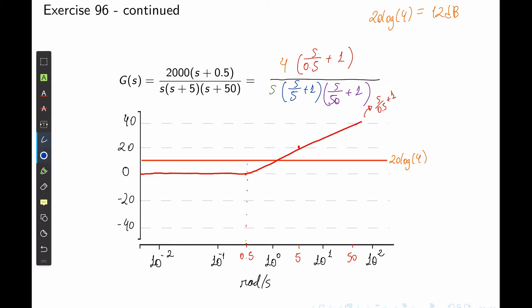Now the real pole with cutoff frequency 5 radians per second: up to the cutoff frequency the magnitude is 0, but past it the magnitude decreases by 20 dB per decade. So at 5 radians per second the Bode plot is at 0, at 50 it should be at negative 20, and at 500 it should be at around negative 40. For the real pole at 50: up to 50 the magnitude is 0, and past 50 it decays by 20 dB per decade, so at 500 radians per second the magnitude should be negative 20 dB.